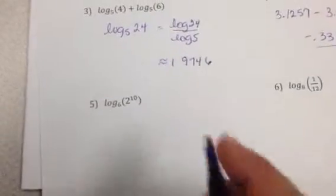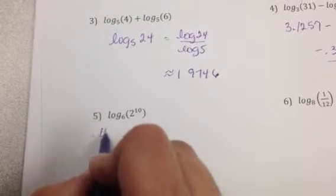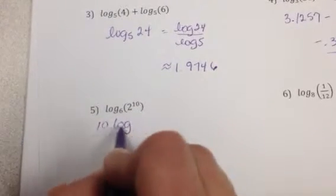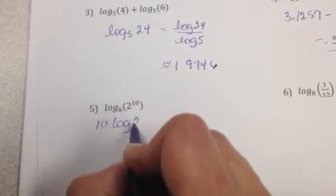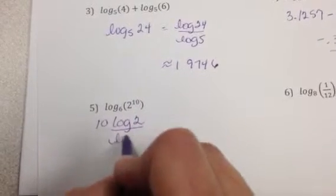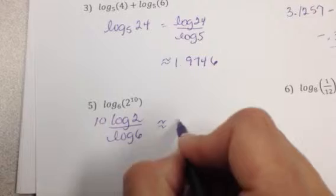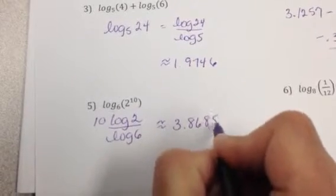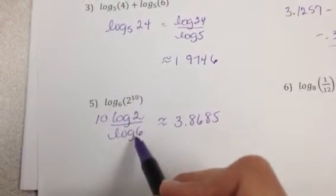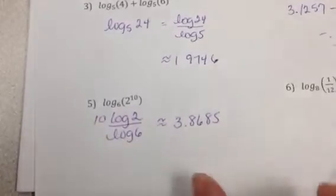Okay. On number 5, notice we have a power up here. So we can take that power and put it out in front. So it's 10 times log of 2 divided by log of 6. And that's going to give us approximately 3.8685. I took the log of 2 divided by the log of 6 and then multiplied by 10.